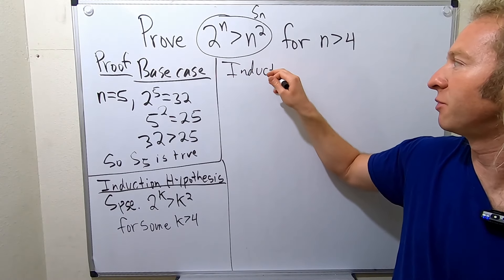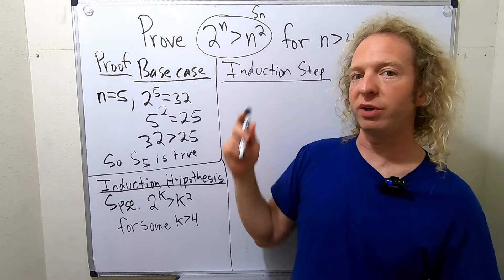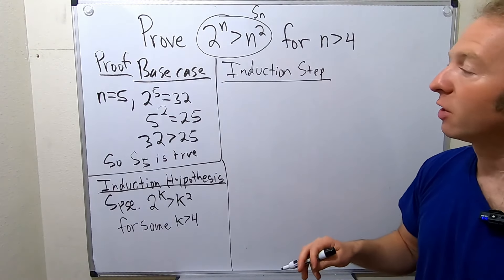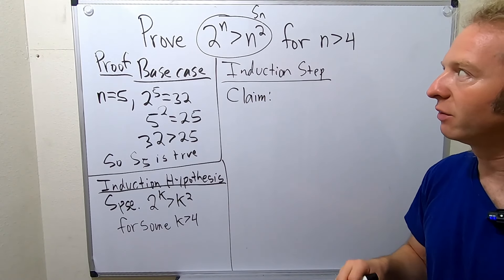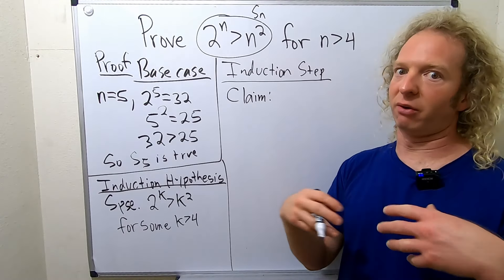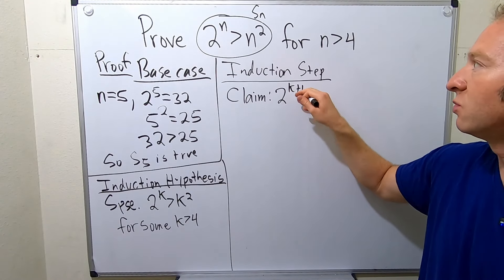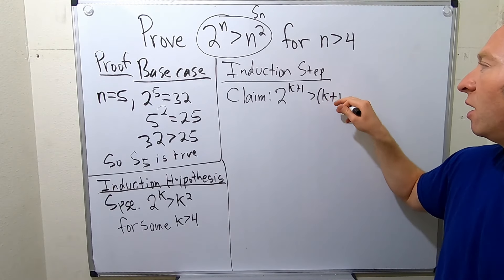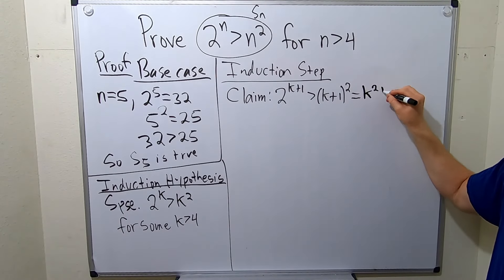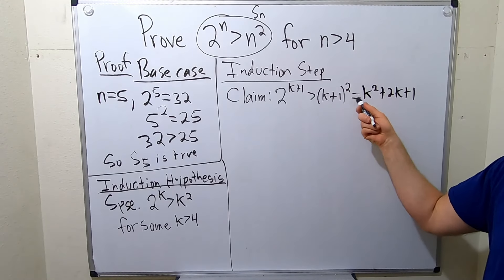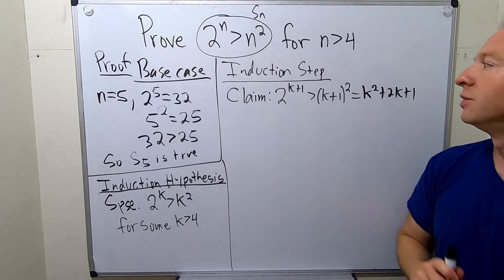Now the induction step. I like to break it into clear steps. This is where we have to show our statement is true when n equals k plus 1. It's important to write 'Claim' before you write it down, so the reader knows you haven't proven it yet. What we have to prove is that 2 to the (k+1) is greater than (k+1) squared. Expanding that, (k+1)² equals k squared plus 2k plus 1.